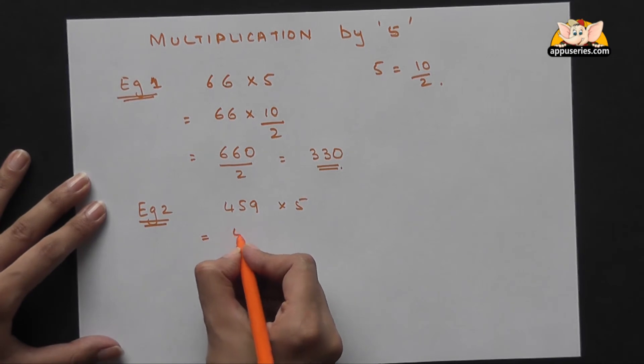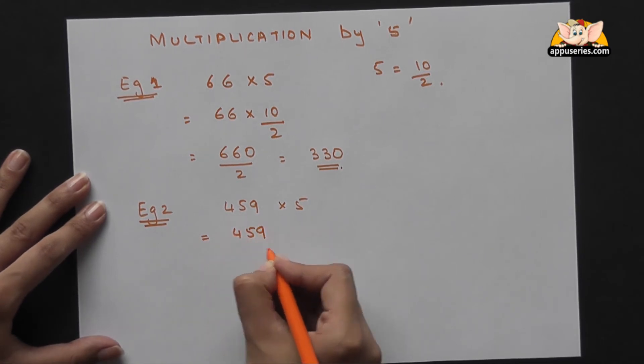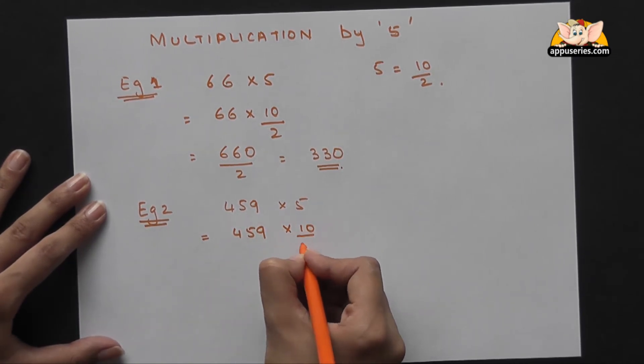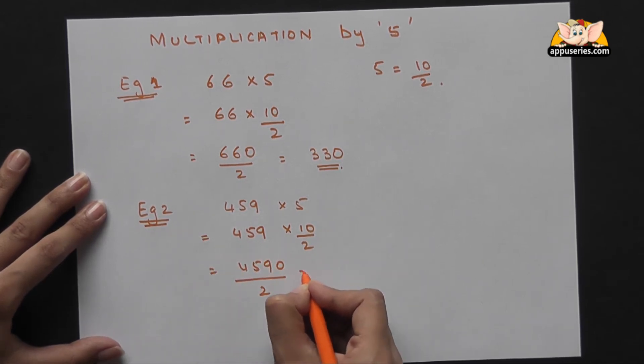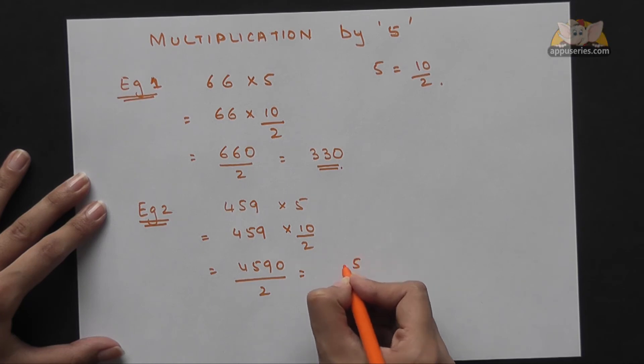So 459 into 10 by 2 gives you 4590 by 2, which is 2295.